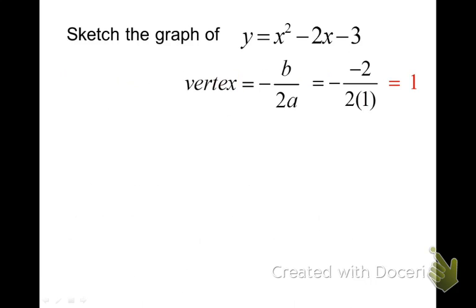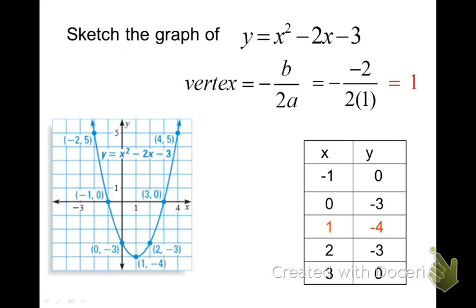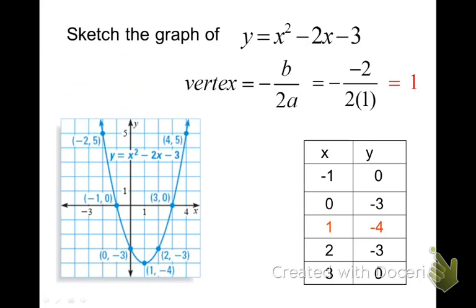Now we plug that 1 back in for x and see what is y. We get 1 squared is 1, negative 2 times 1 is negative 2. What is 1 minus 2 minus 3? 1 minus 2 minus 3 is negative 4. So this is our table of values: 1, negative 4. Then we plug in some other numbers for x to see what we get for y. When we plug in negative 1 for x, we get 0 for y. When we plug in 3 for x, we get 0 for y. That gives us some points and a smooth curve. The equation for the axis of symmetry is x equals 1 because that's the value of the x.